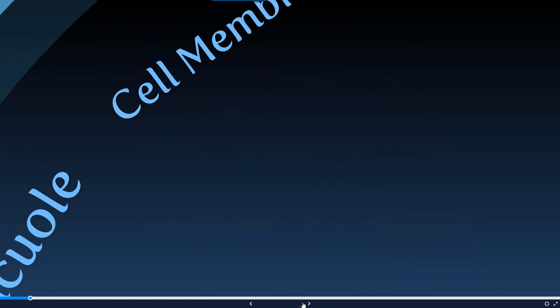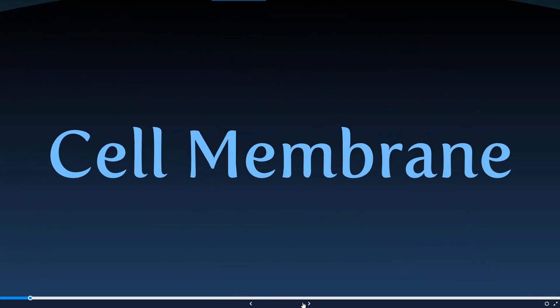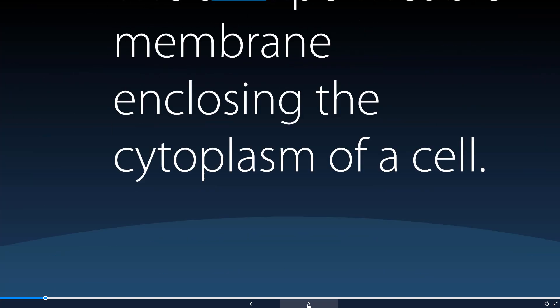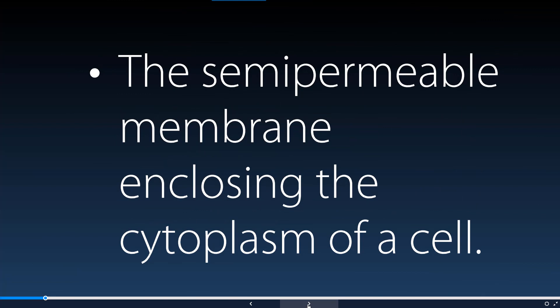The first component of our cell to point out is the cell membrane. The cell membrane is a semi-permeable membrane that encloses the cytoplasm as well as all the organelles of the cell. By semi-permeable, it means that there are small openings by which small substances can pass through.